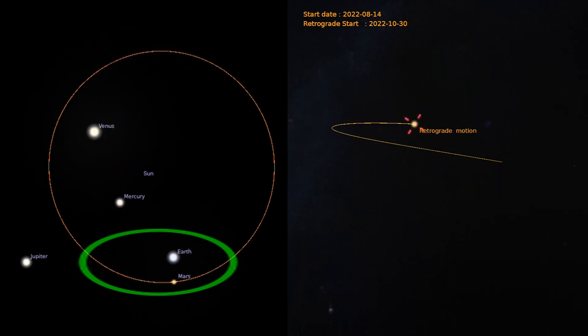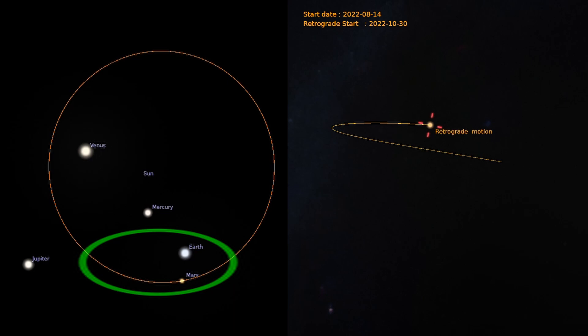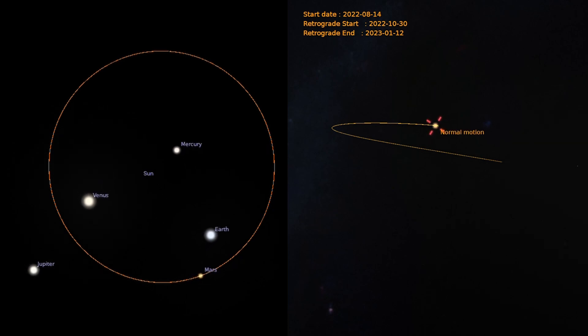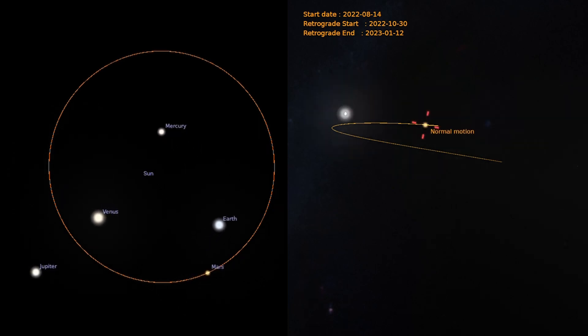The illusion also happens with Jupiter and other planets which are in the outer orbit of Earth. Normal motion continues from 12th of January 2023.